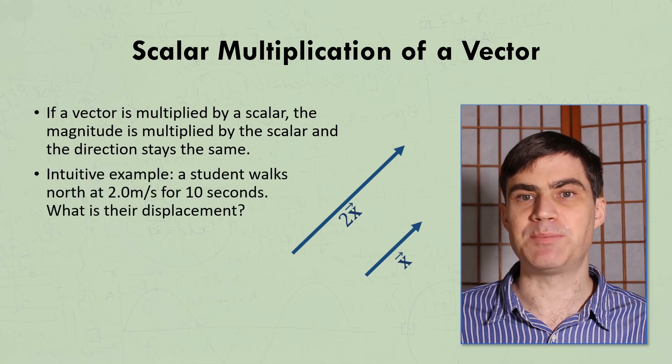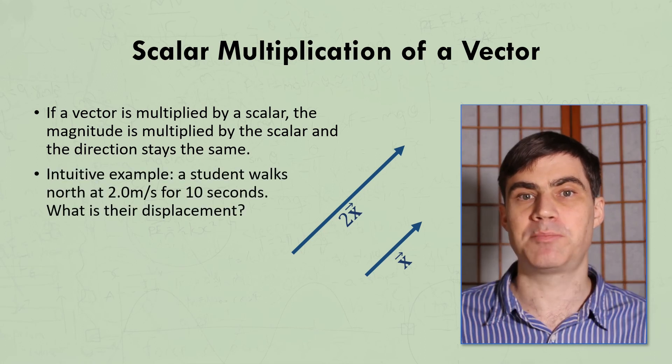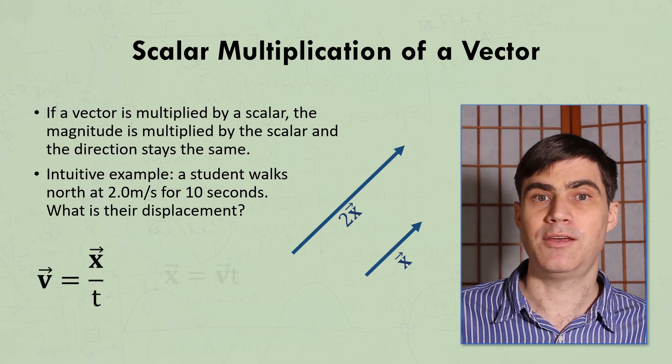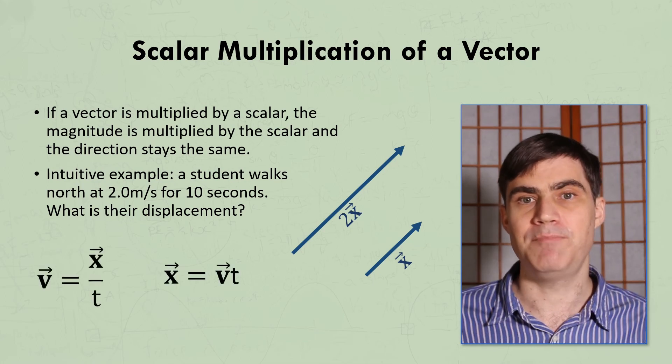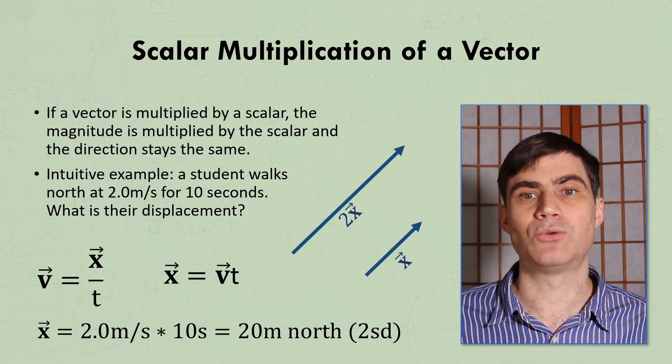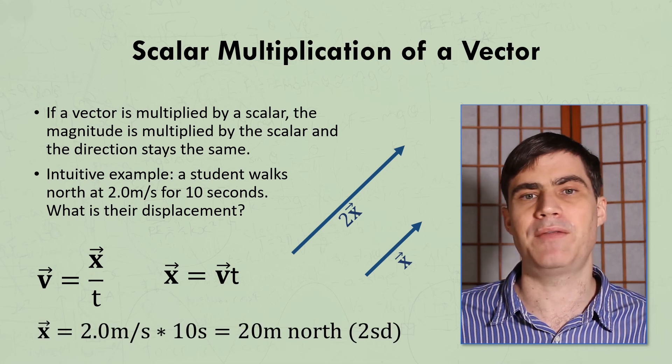For a simple explanatory example involving real quantities, let's say we want to calculate the displacement of someone who walks at a velocity of 2 meters per second for 10 seconds. This is a case of a vector, velocity, being multiplied by a scalar, time. So the velocity and displacement must have the same direction, which is logical since the person must end up in the direction that they walked.